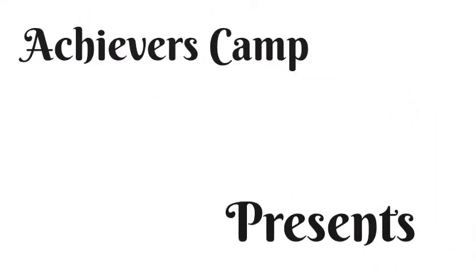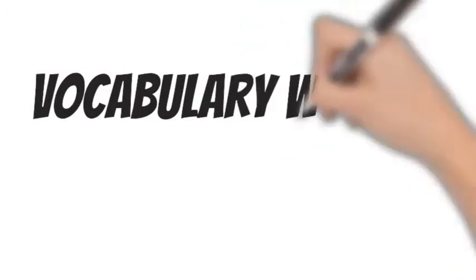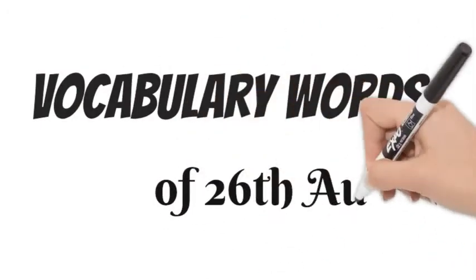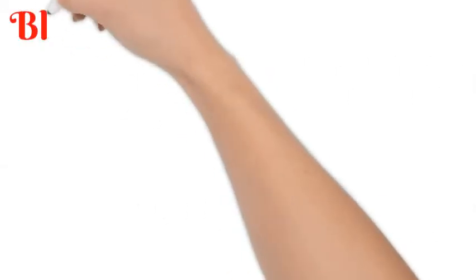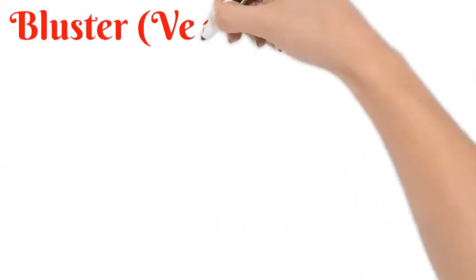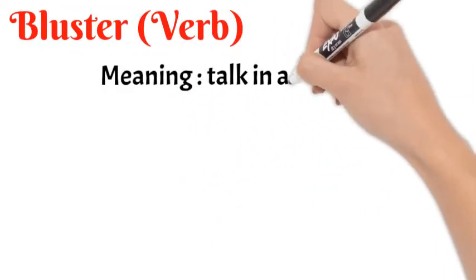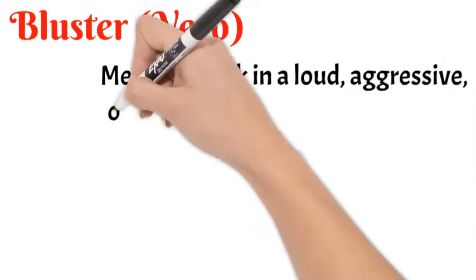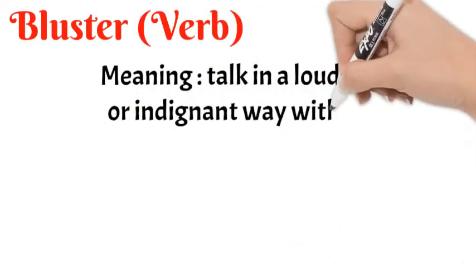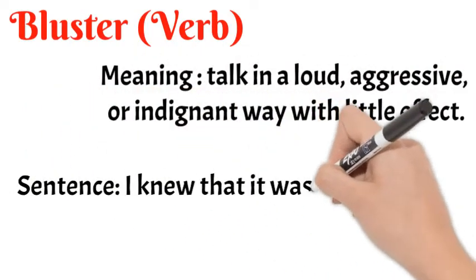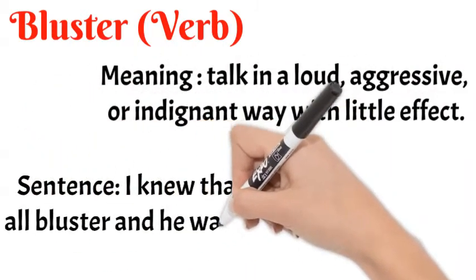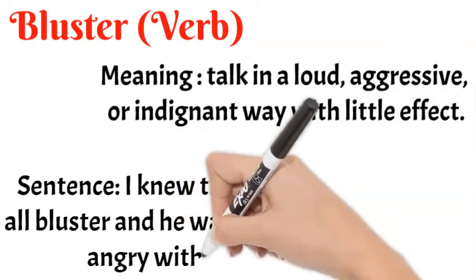Achievers Camp presents vocabulary words of 26th August. Let's understand the very first word for today: bluster. Bluster is a verb which means talk in a loud, aggressive, or indignant way with little effect. If you are talking very aggressively or loudly, you say bluster.